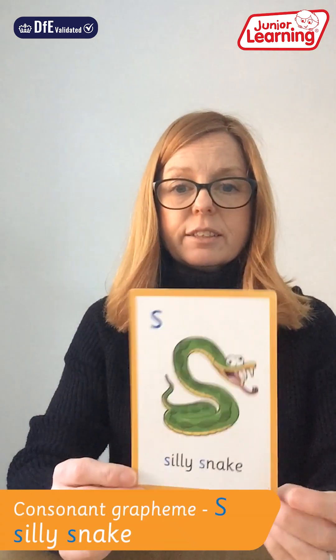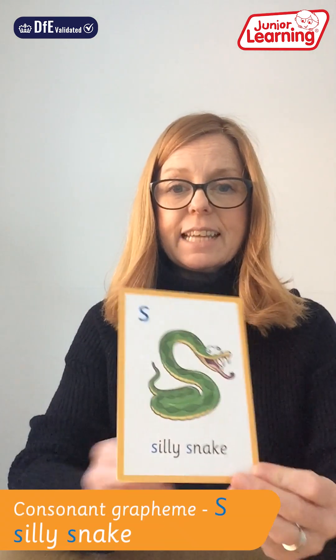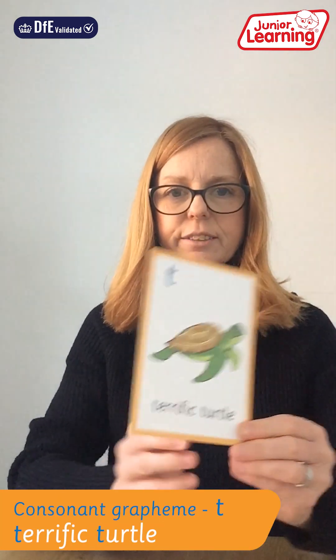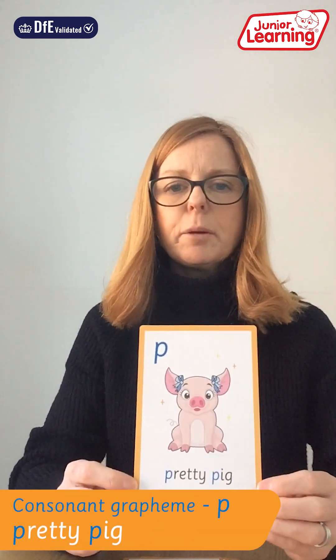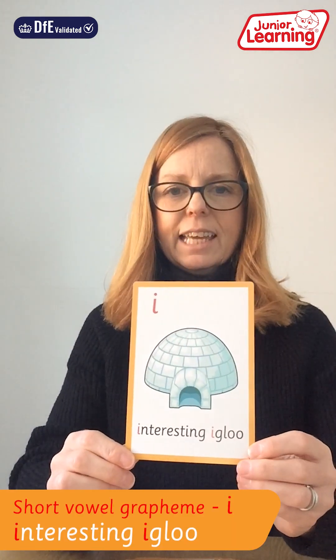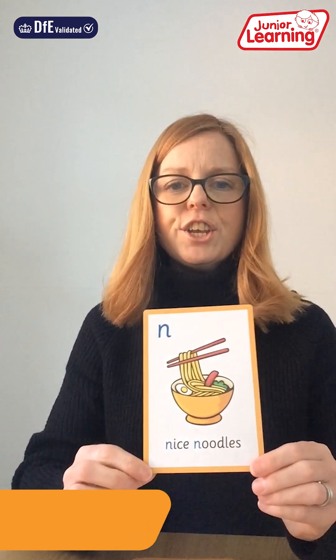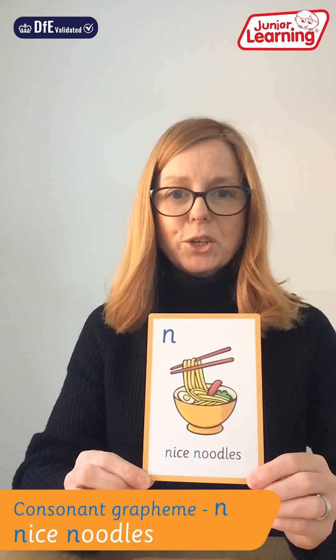So we'll begin with S — silly snake. A — amazing apple. T — terrific turtle. P — pretty pig. I — interesting igloo. N — nice noodles.